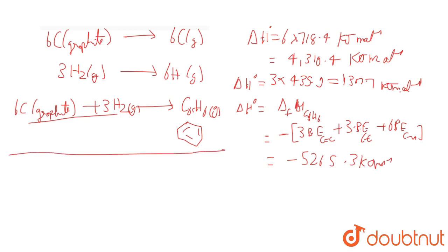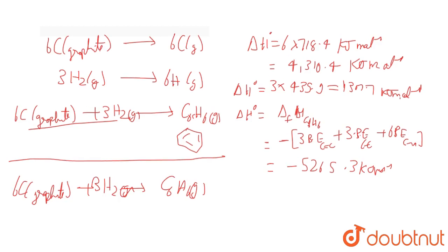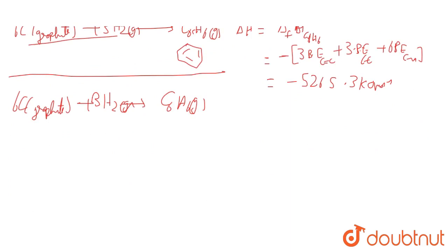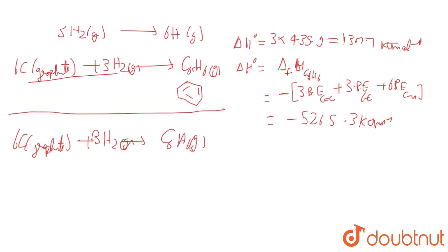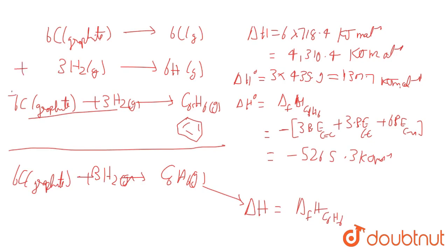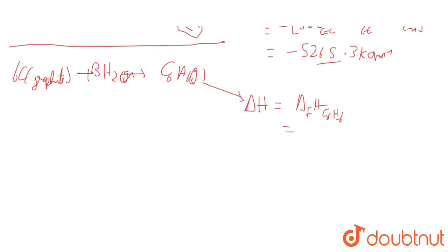If we add all three equations, we get: 6C(graphite) + 3H₂(gas) → C₆H₆(gas). The net enthalpy change equals the sum of the enthalpies from all three equations. Adding them together gives us +352.8 kJ/mol as the theoretical heat of formation of benzene.